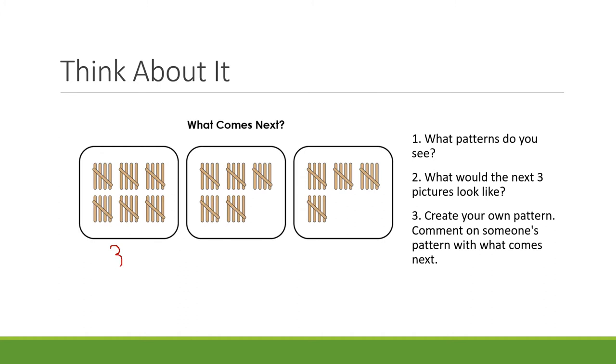And then with one less group of five, the second set has 25, and the third set has 20 total popsicle sticks. So what patterns did you see? You might have noticed that each set of popsicle sticks has one less group of five, so the pattern is counting back by five. What would the next three pictures look like?